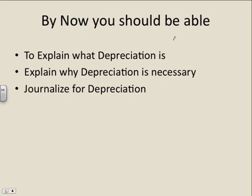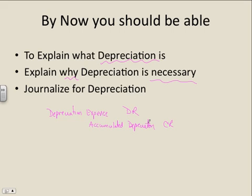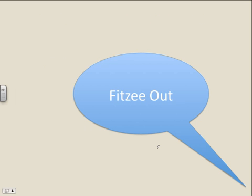By now you should be able to explain what depreciation is, why it is necessary, and be able to prepare the journal entry. The journal entry is always depreciation expense as your debit and accumulated depreciation as your credit. Hope that was helpful — don't get too intimidated by this topic, and we will do some examples in the next video.